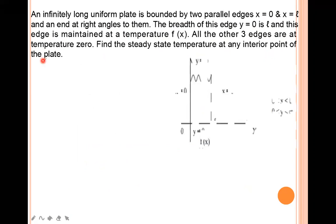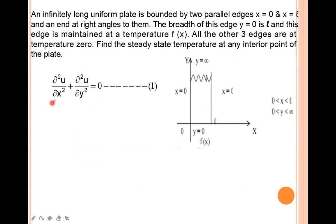This is the general form of the two-dimensional heat equation in the case of steady state. The given boundary conditions are: all three edges are at temperature 0 except y = 0, which is maintained at temperature f(x).